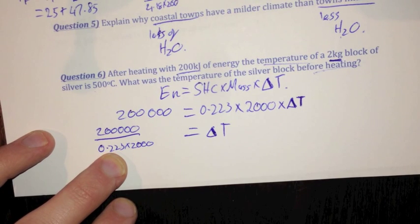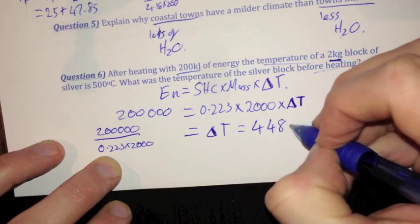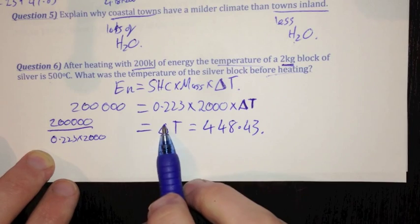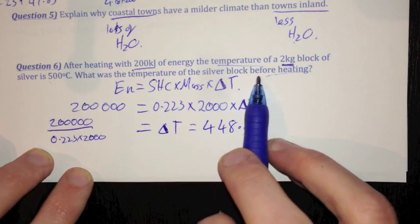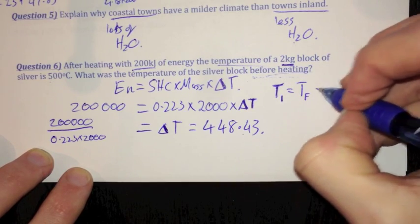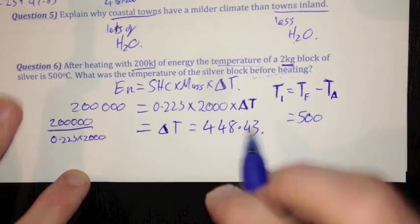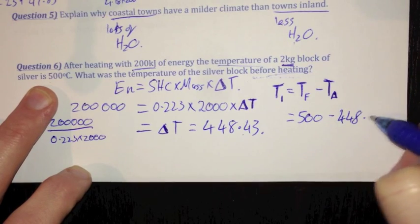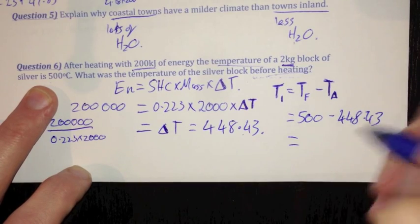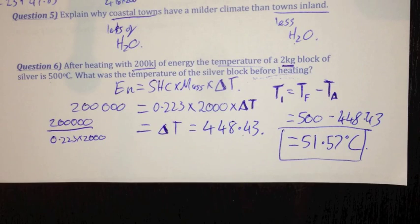This is my change in temperature. The question asks for the temperature before heating. Temperature initial equals temperature final minus temperature change. My temperature final is 500 degrees, take away my temperature change of 448.43, which equals approximately 51.57 degrees Celsius. So the silver, before we heated it with all this energy, had a starting temperature of 51.57 degrees Celsius.